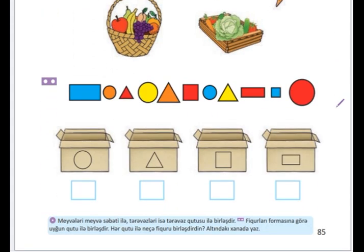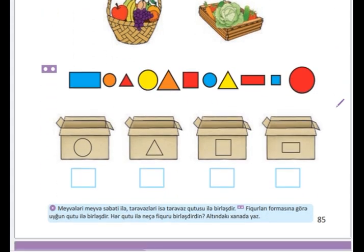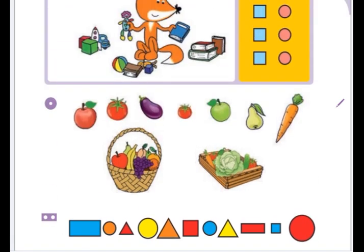Tapşırıq birə baxaq, uşaqlar. Meyvələri meyvə səbəti ilə, tərəvəzləri isə tərəvəz qutusu ilə birləşdir. Uşaqlar, alma meyvədi, armud meyvədi. Pomidor, badımcan və kök - bunlar tərəvəzlərdir.